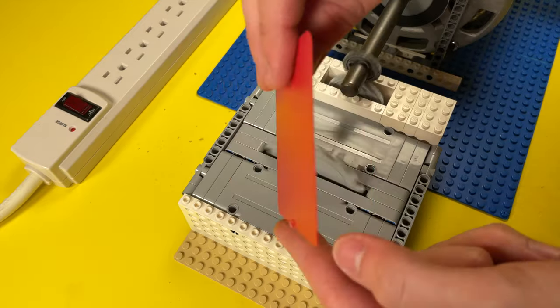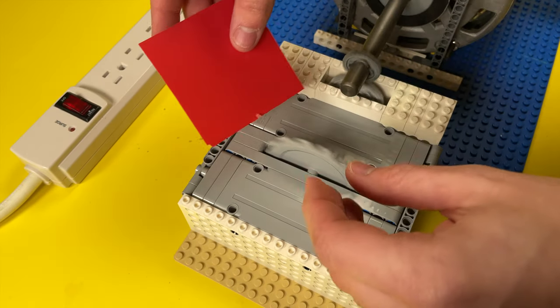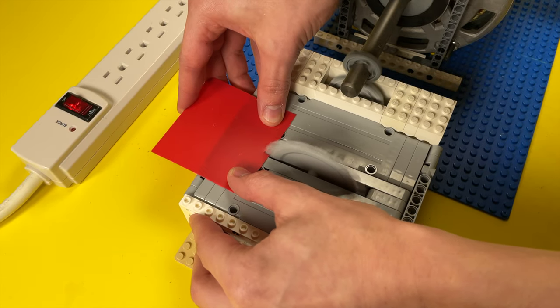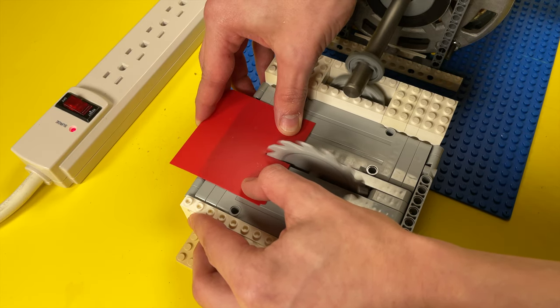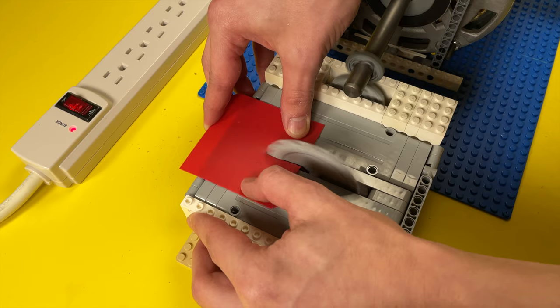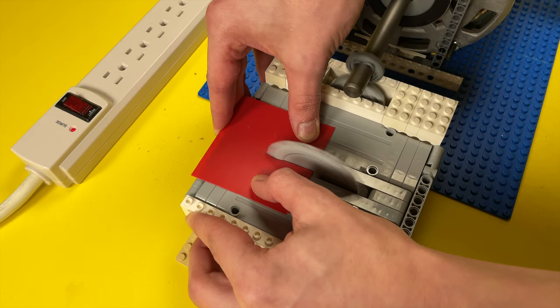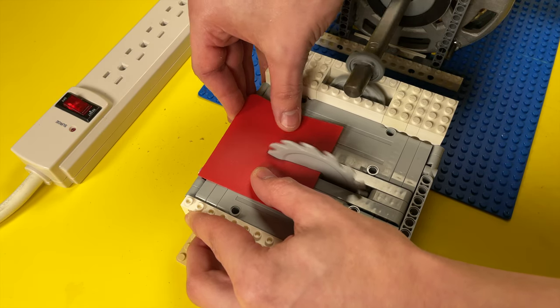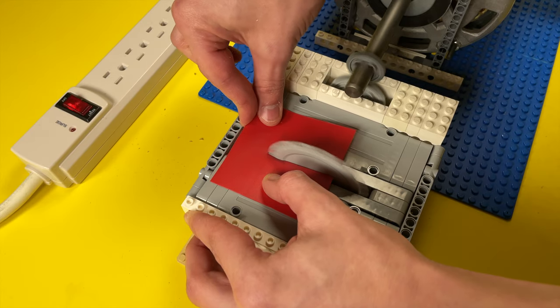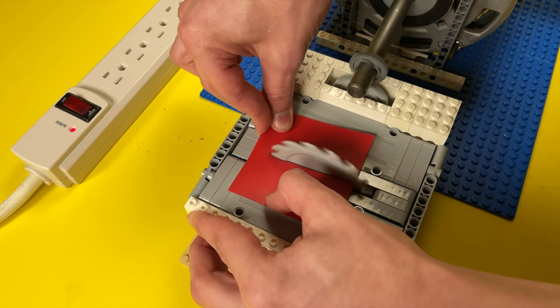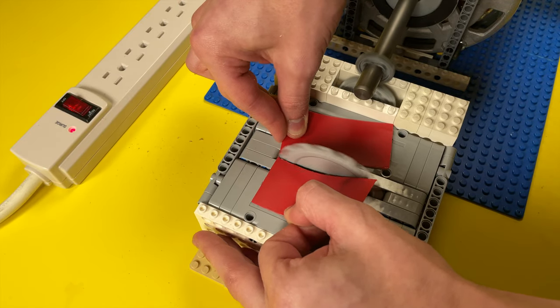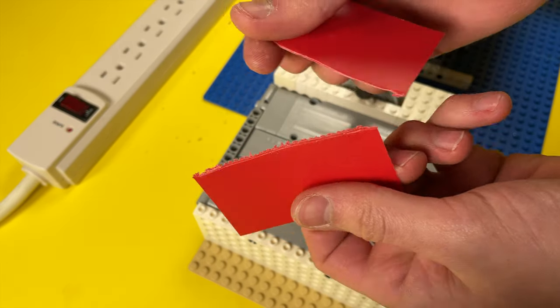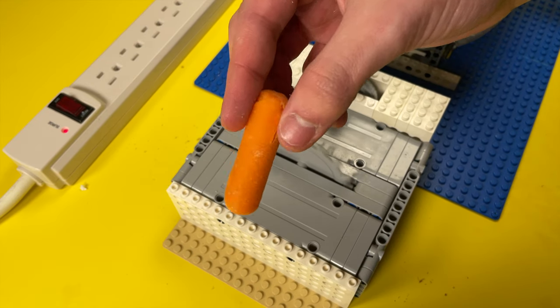Now let's try a decently thick piece of plastic from a folder. And let's just see if it can cut a carrot for fun.